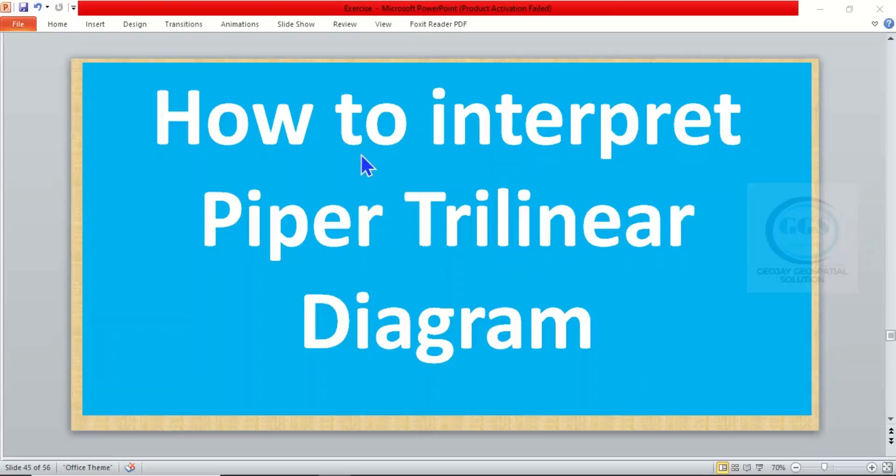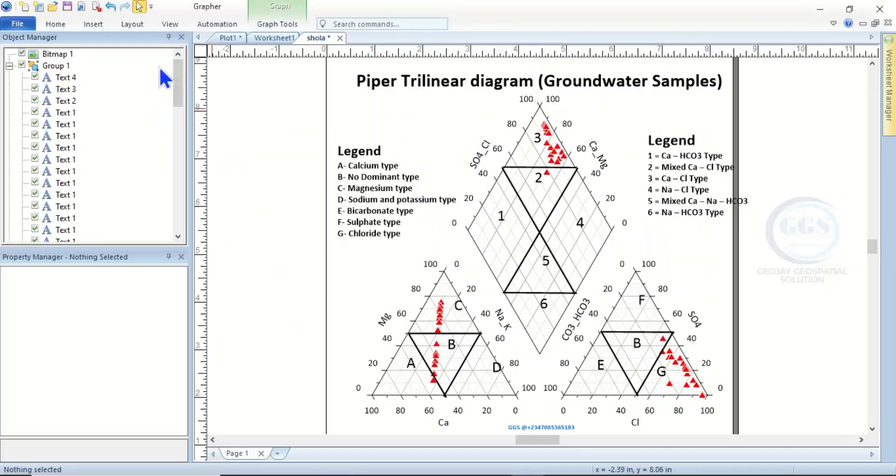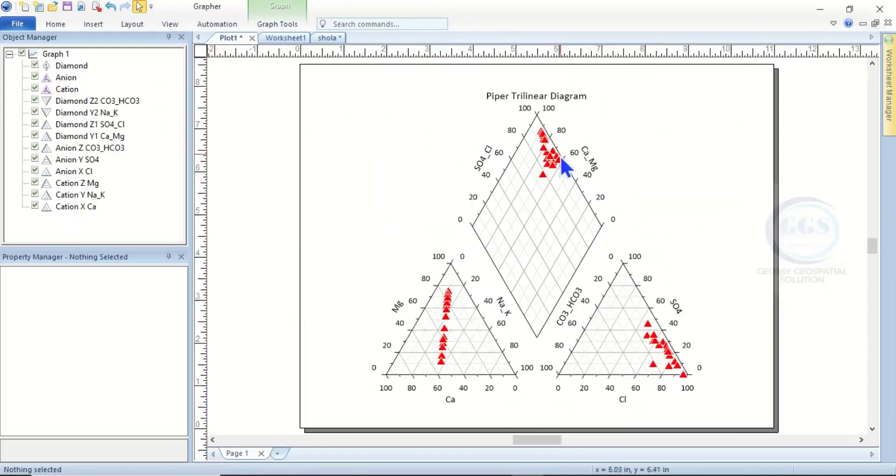In today's tutorial, I want to show you how to interpret Piper trilinear diagrams. In our previous video, I showed you how to plot your Piper trilinear diagram, and this was the result we got. After plotting your diagram, how do you interpret it? The key is this: if